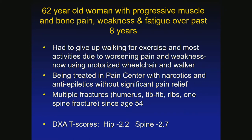Case 3: A 62-year-old woman with progressive muscle and bone pain, weakness, and fatigue over the past eight years. She had to give up walking and most activities due to worsening pain and weakness and was now using a motorized wheelchair and walker. She was at the pain center; they thought it could be psychological and were treating her with narcotics and anti-epileptics. She'd had multiple fractures of the humerus, tibia-fibula, ribs, and spine since age 54.